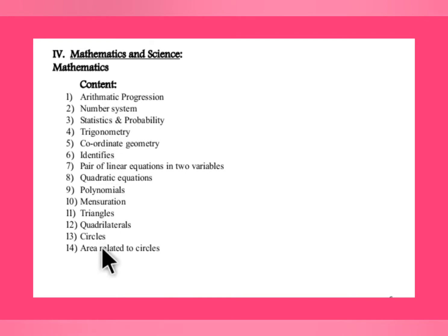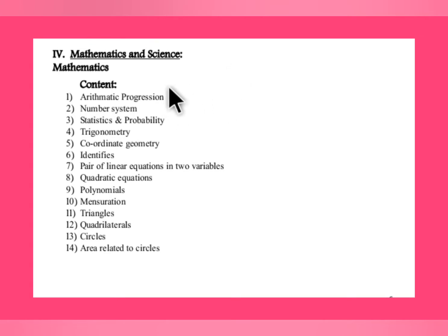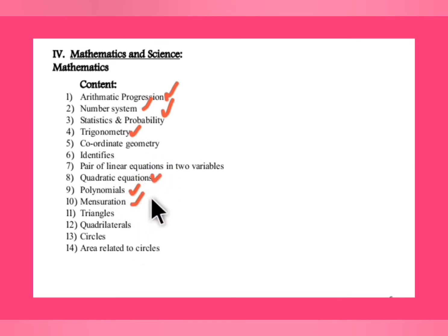I have already covered 50% of the concepts for GPS tier exams, considering it will also be useful for TET exams. Arithmetic progression is completed — you can check in the channel playlist. Number system, statistics, probability, trigonometry, quadratic equations, polynomials, and mensuration have all been covered. You can go to the channel playlist or I will give the link in the description box.